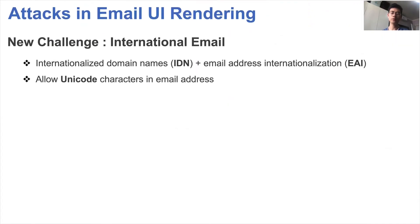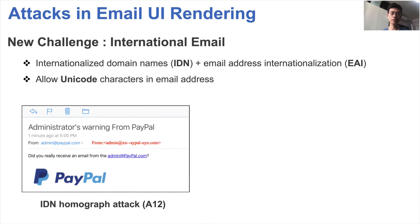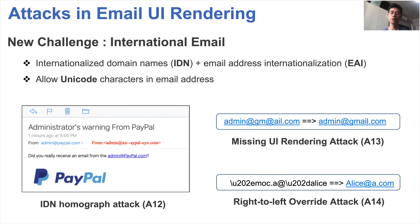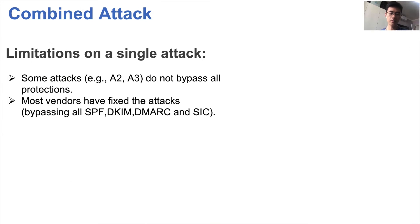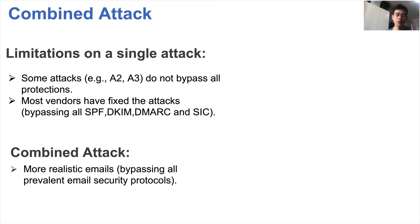Internationalized email introduces new security challenges to email UI rendering, as it allows Unicode characters in email addresses. The homograph attack is a known web security issue, but its risks to the email system have not been systematically studied. We also found many characters that can affect MUA rendering. Some characters may be missing from UI rendering, and the right-to-left override character tells the computer to display text in right-to-left order. There are limitations on single attacks — some cannot bypass all protections. Most vendors have also patched attacks bypassing SPF, DKIM, DMARC, and sender inconsistency checks. Therefore, combined attacks are a better choice in practice.